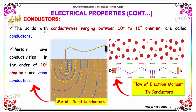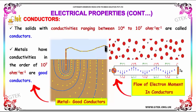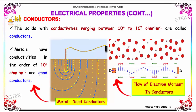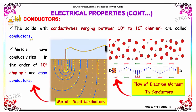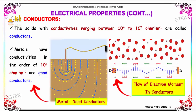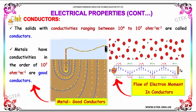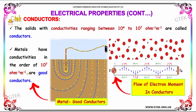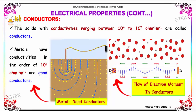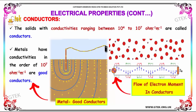Conductors are solids with conductivities ranging between 10⁴ to 10⁷ per ohm per meter. Metals have conductivities in the order of 10⁷ per ohm per meter, and they are called good conductors.